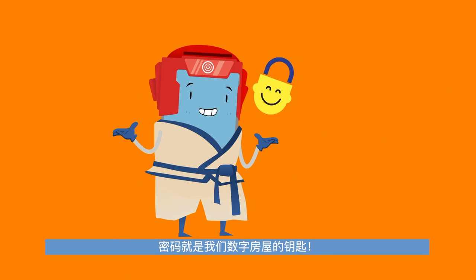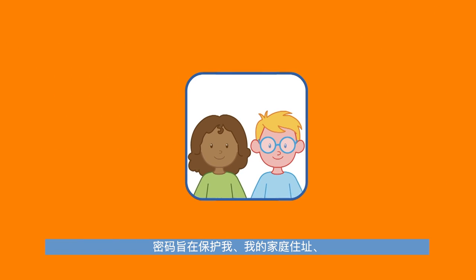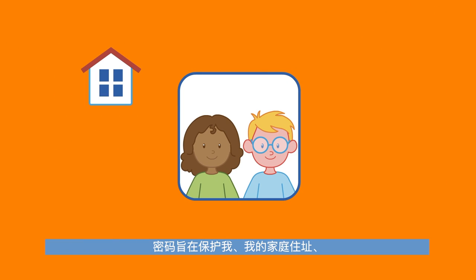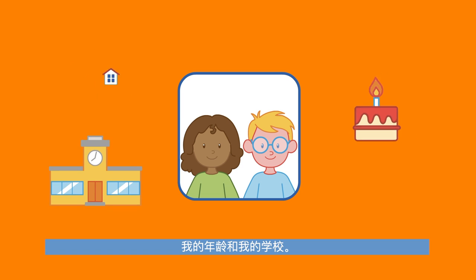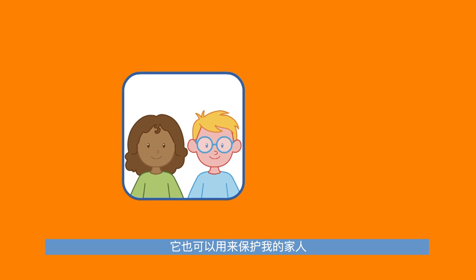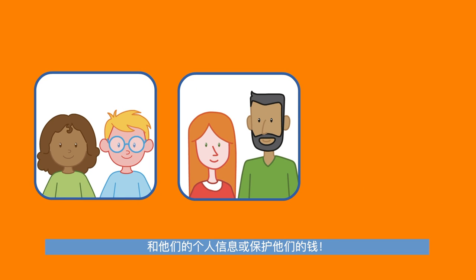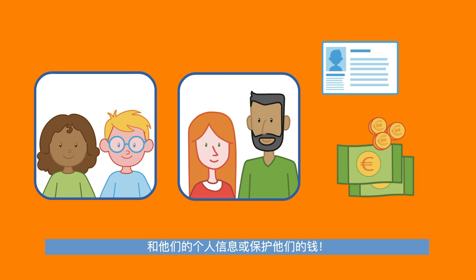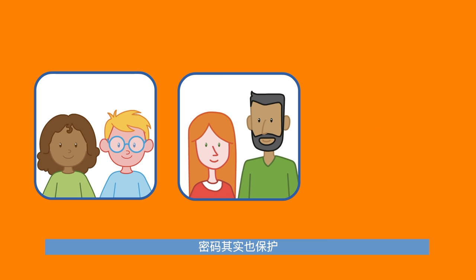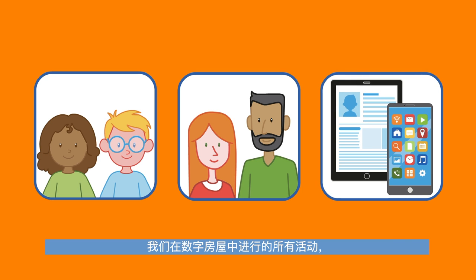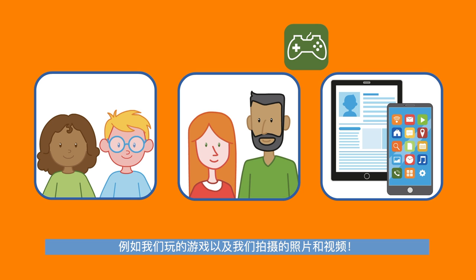A password is the key to our digital house. A password is meant to protect me, my home address, my age and my school. It is also meant to protect my family and their personal information, or to protect their money. But a password is also meant to protect all the activities we get up to in our digital house, like the games we play and the photos and videos we take.